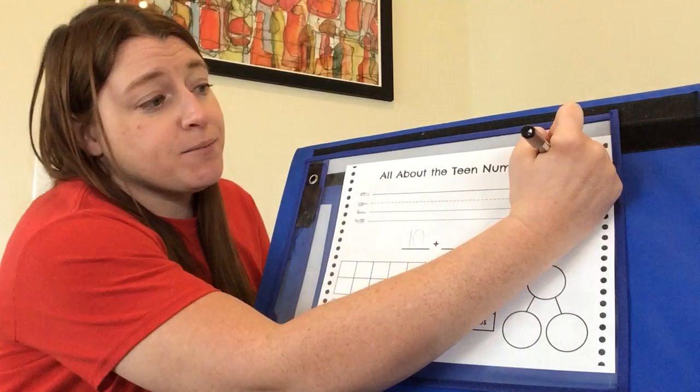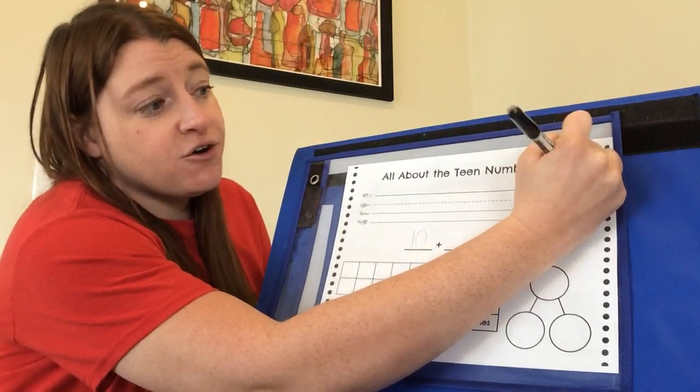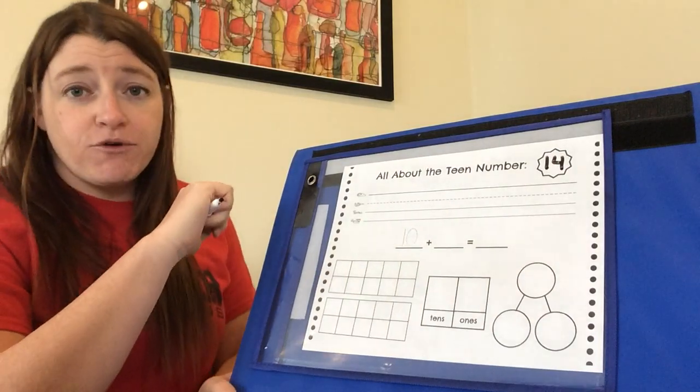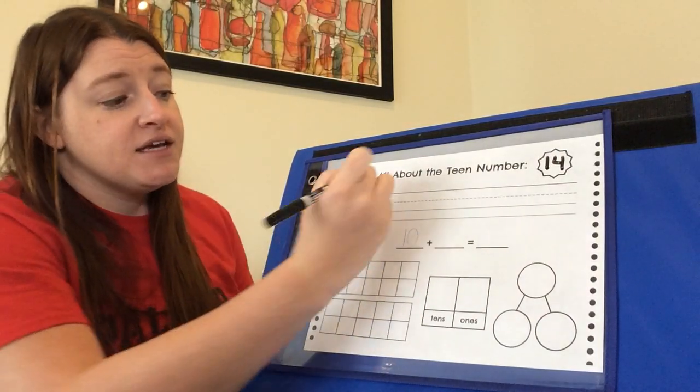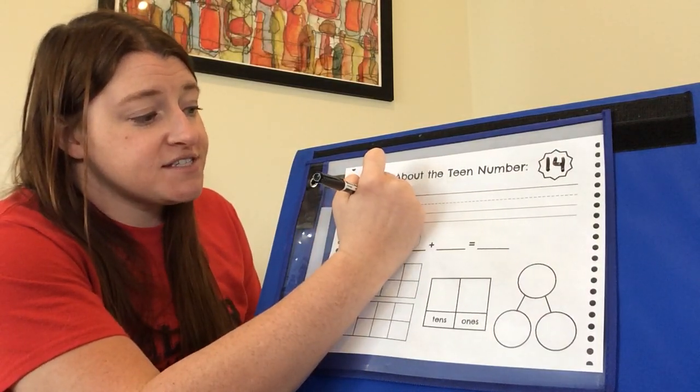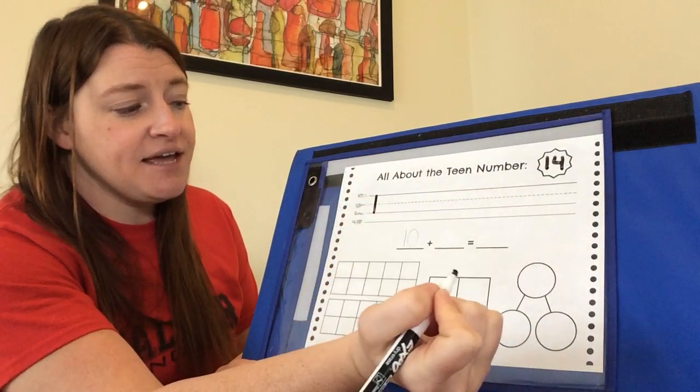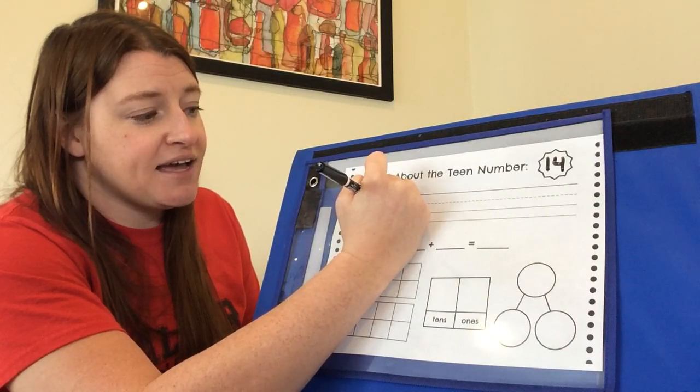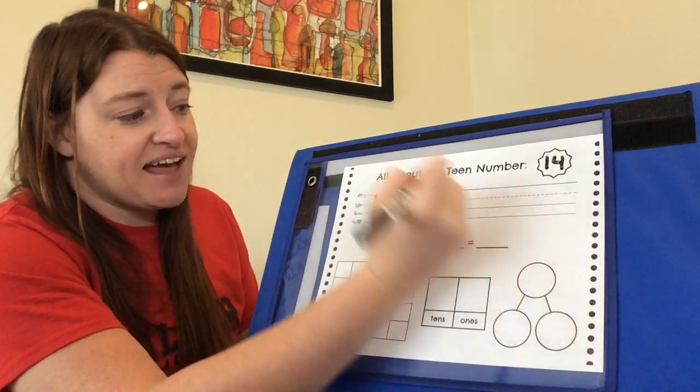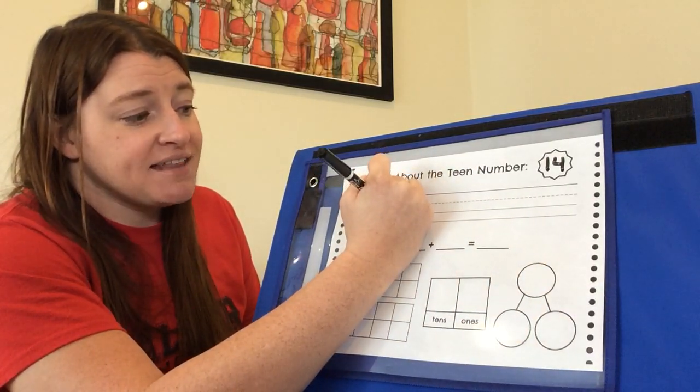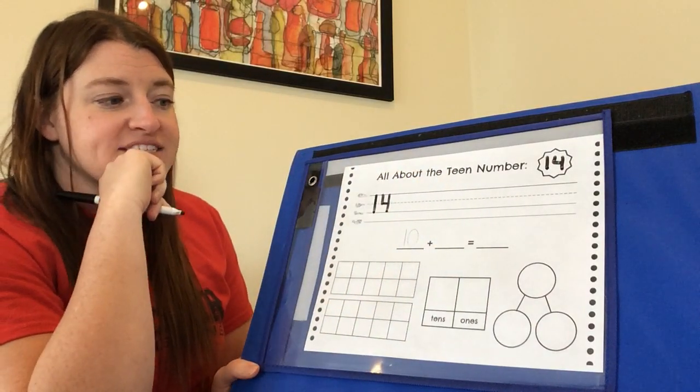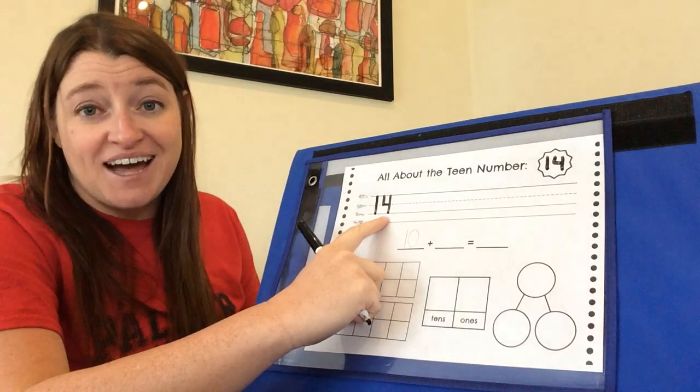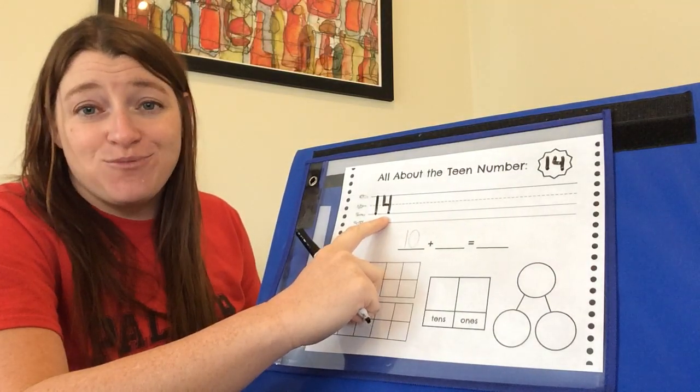Okay, so today we're going to start with the number 14. So our first job is to practice writing the number 14, making sure that we're forming our digits the right way. So with the number one, we always start at the skyline and go down to the grass line. And then for the number four, we start at the skyline, go down to the plane line, fly across the plane line, back up to the skyline, and straight down to the grass line. The poem for four is down, over, down some more. That's the way you make a four.